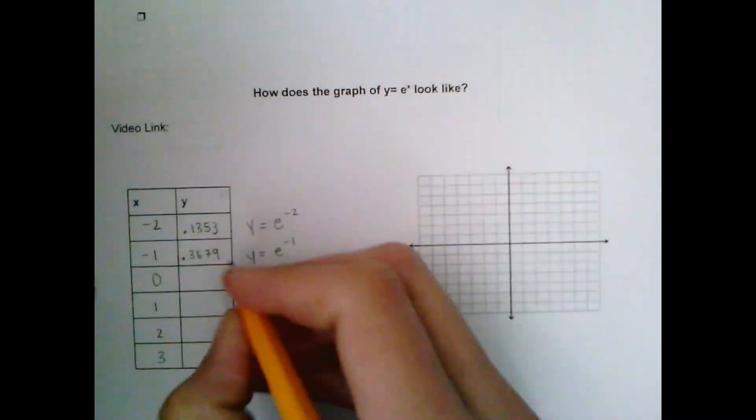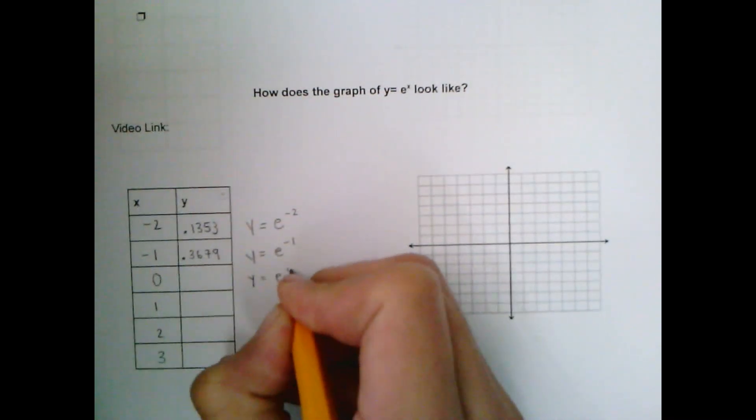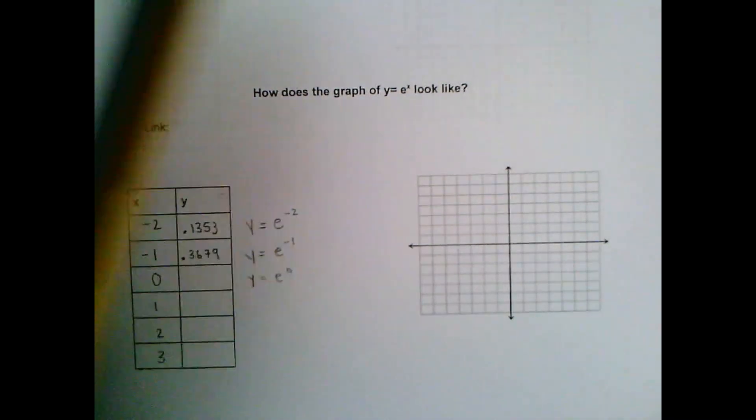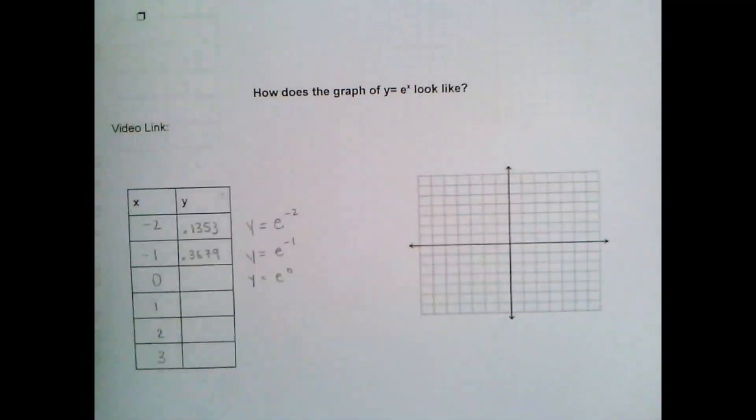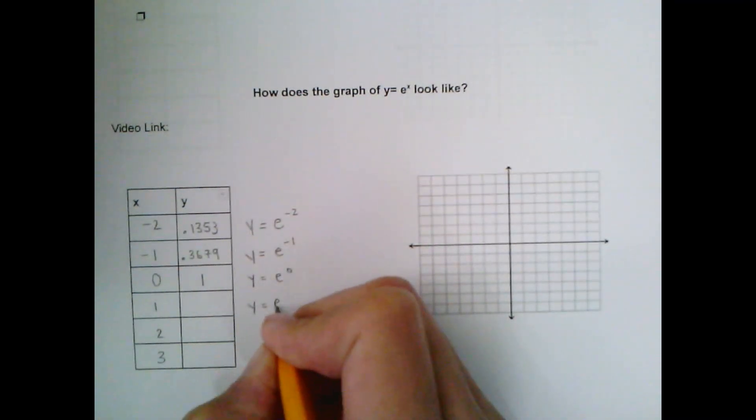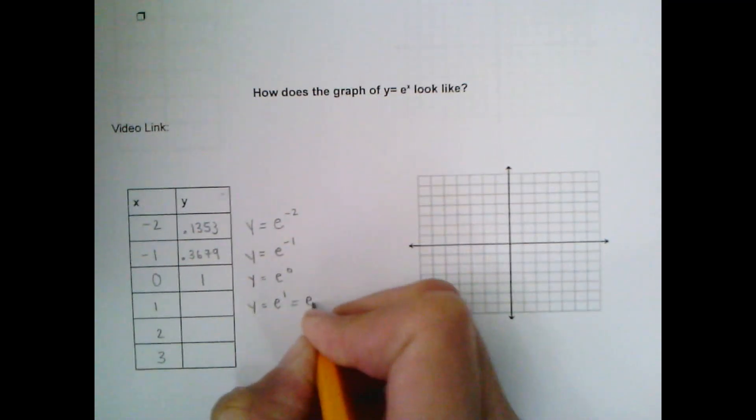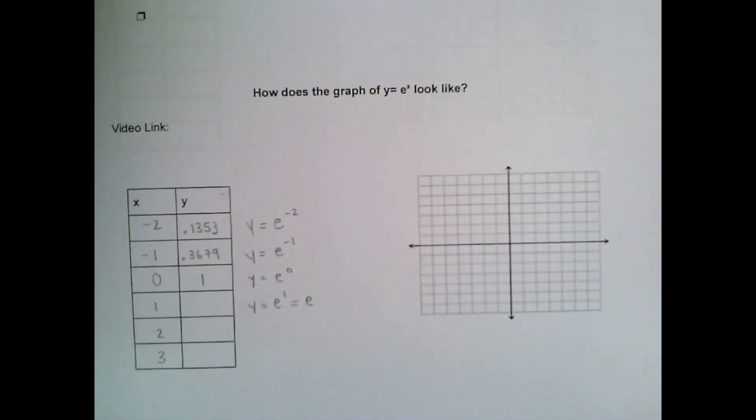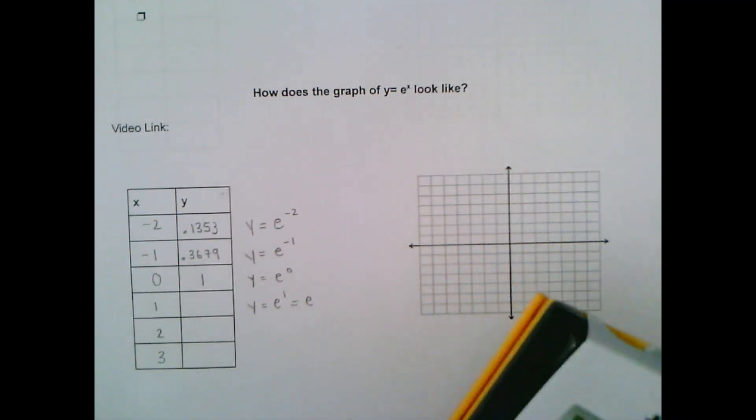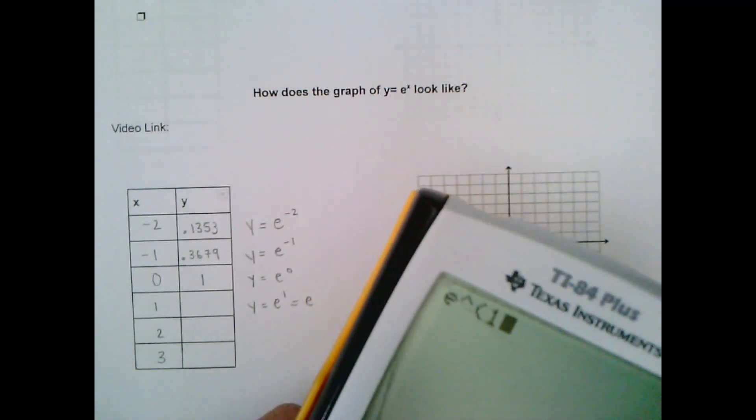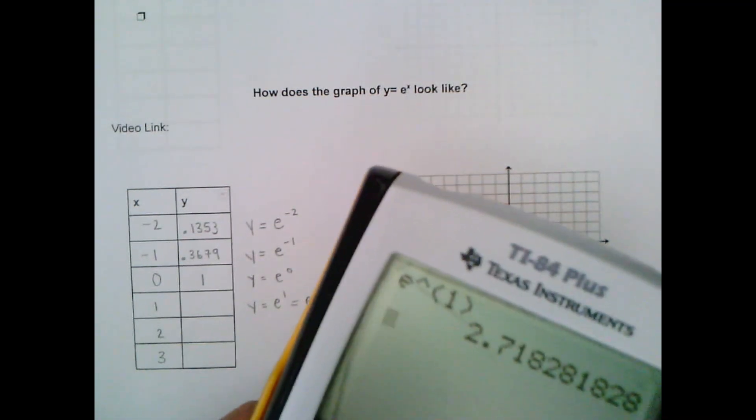Okay the next value I'm going to do is y equals e to the zero power. So this I could use my calculator or I could use the fact that any number to the zero power is equal to 1. Alright next up we're going to plug in 1. E to the first power well that's just equal to E and I know from the videos you saw that E is equal to 2.71 and some other stuff and then if you forgot you could just enter this in your calculator figure out what E to the 1 is, 2.718.